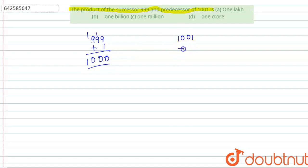So that can be found by subtracting one, so that is also 1000. So product is that we have to multiply both of them.